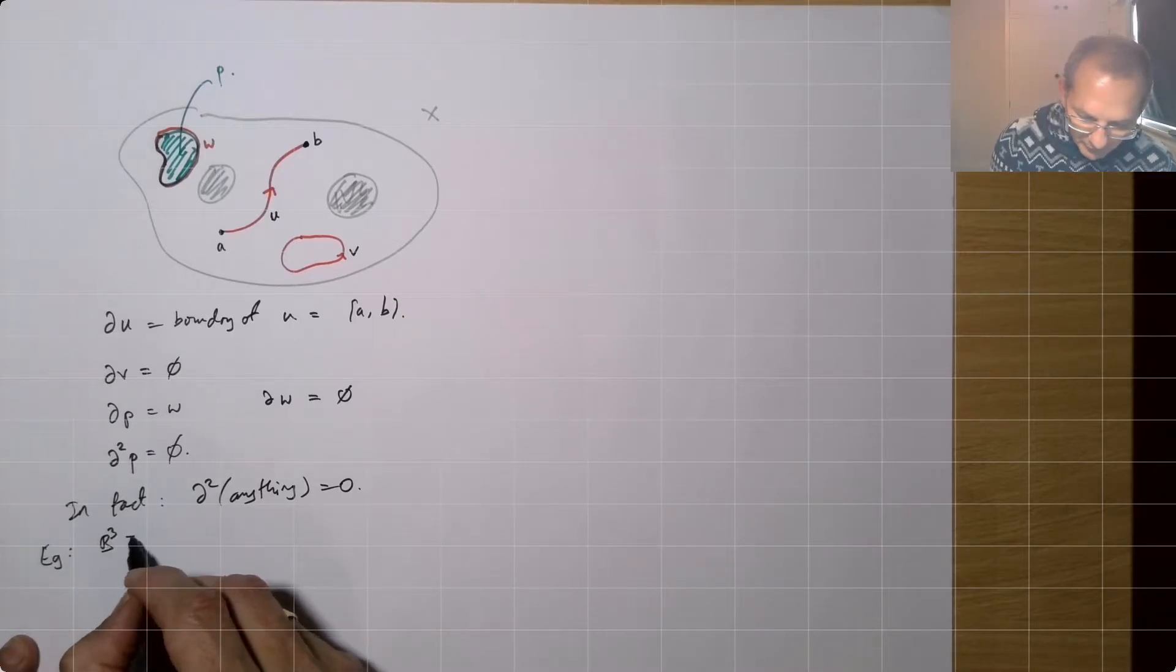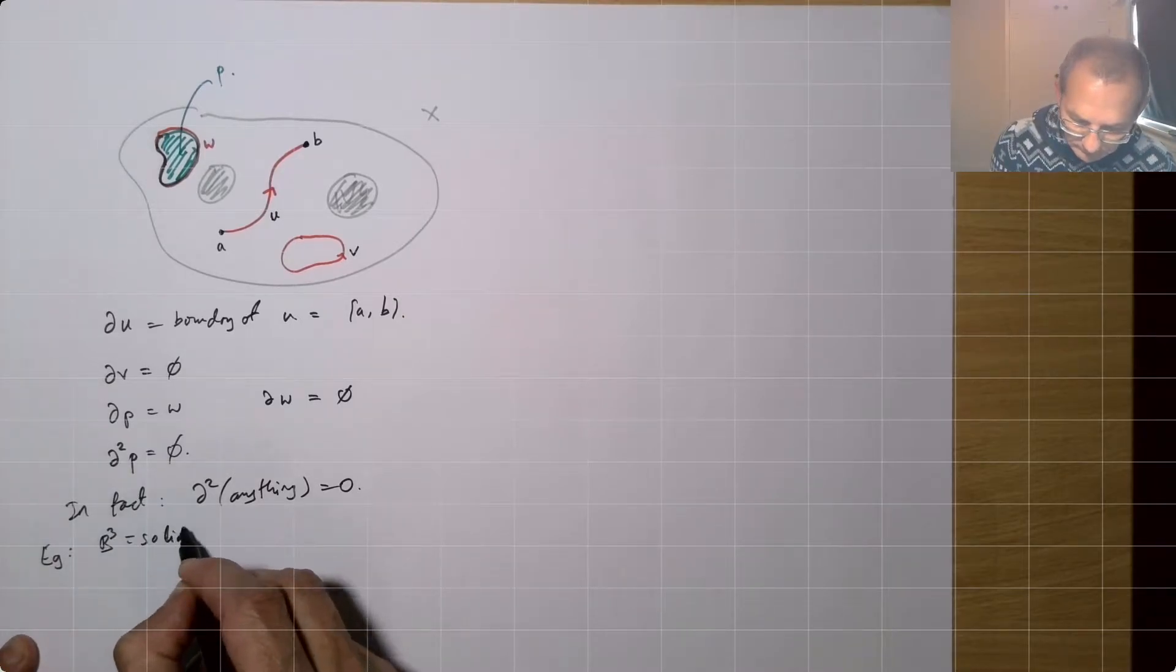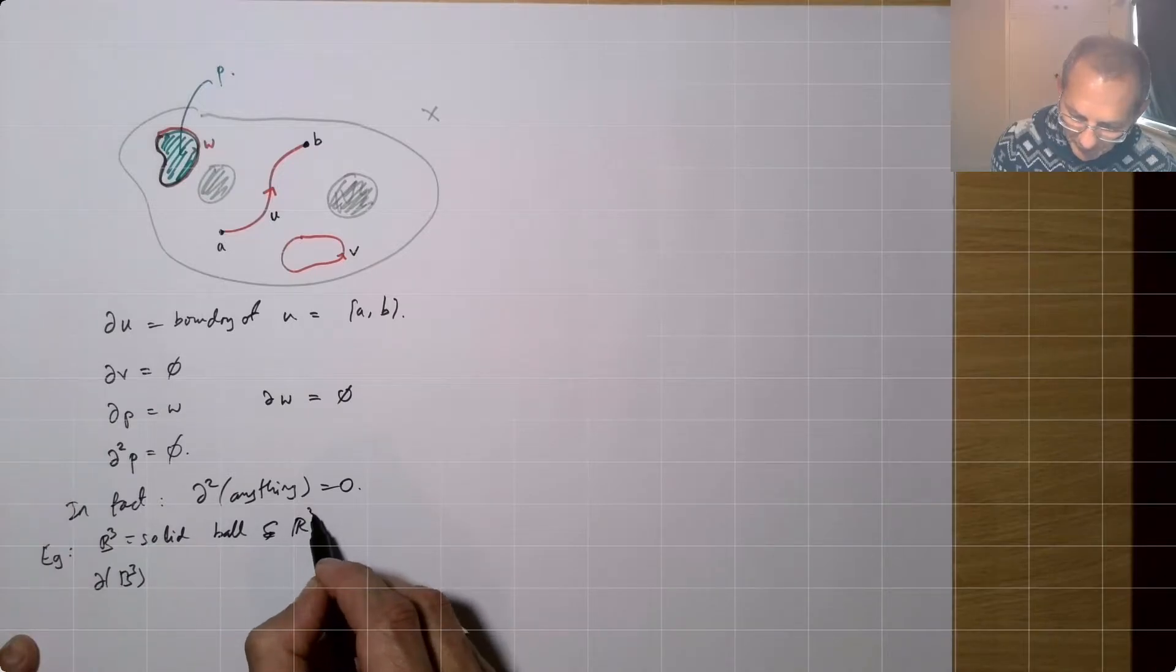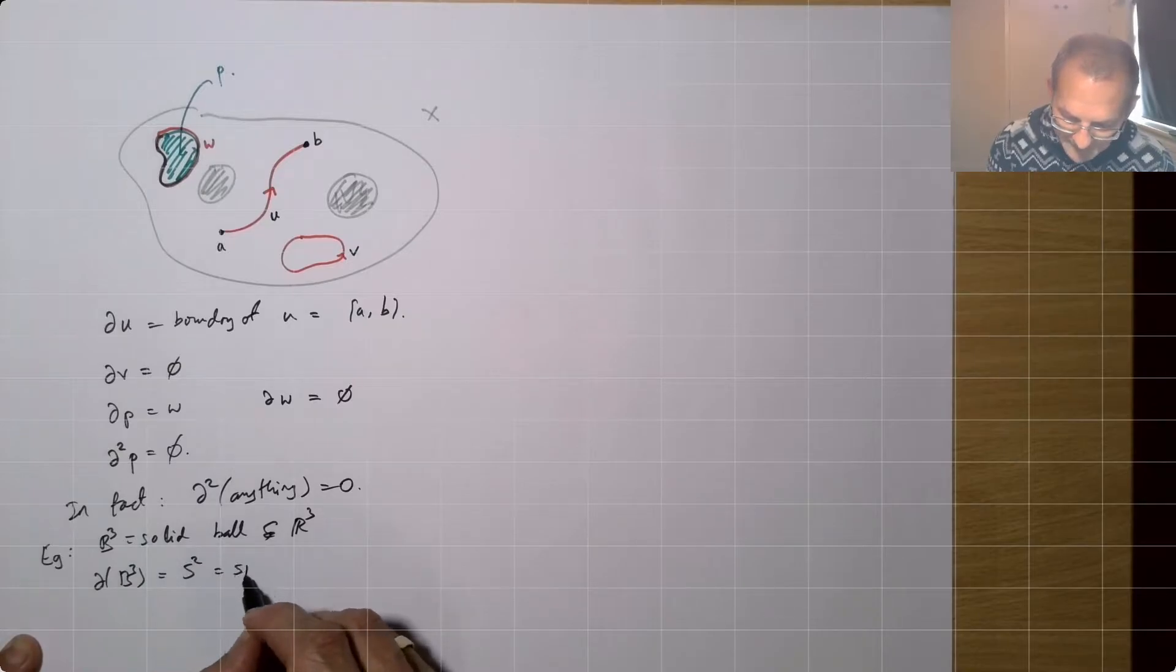I mean, so another way we could do a kind of example one dimension higher. B3 is a solid ball. And then the boundary of that B3, a subspace of three-dimensional Euclidean space. Boundary of B3 is an ordinary sphere.